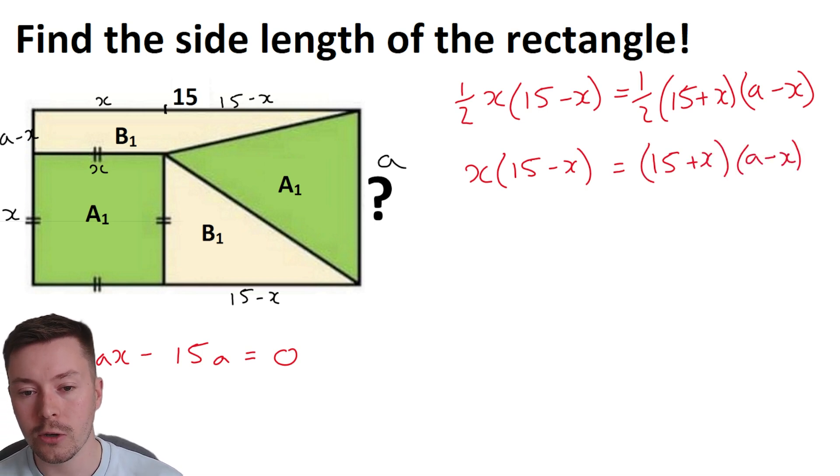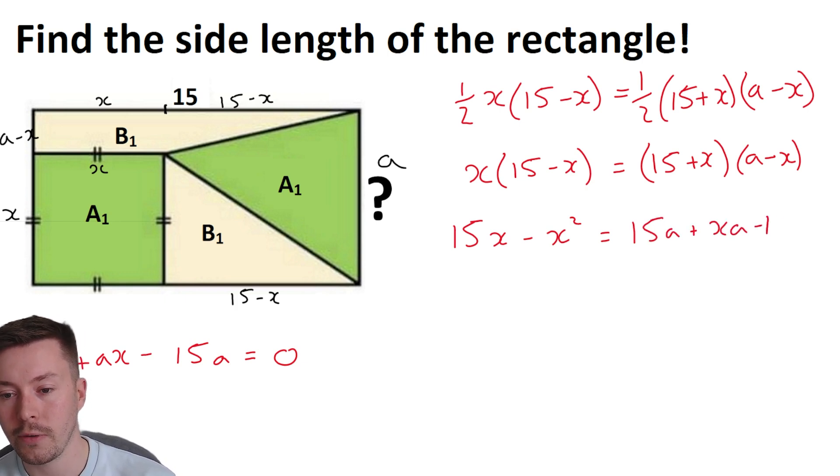Right, now what I can do straight away there is double both sides of that equation to get X times 15 minus X is equal to 15 plus X times by A minus X. The next thing I can do is then expand the brackets on this. So get 15X minus X squared is equal to 15A plus XA minus 15X and then minus X squared.